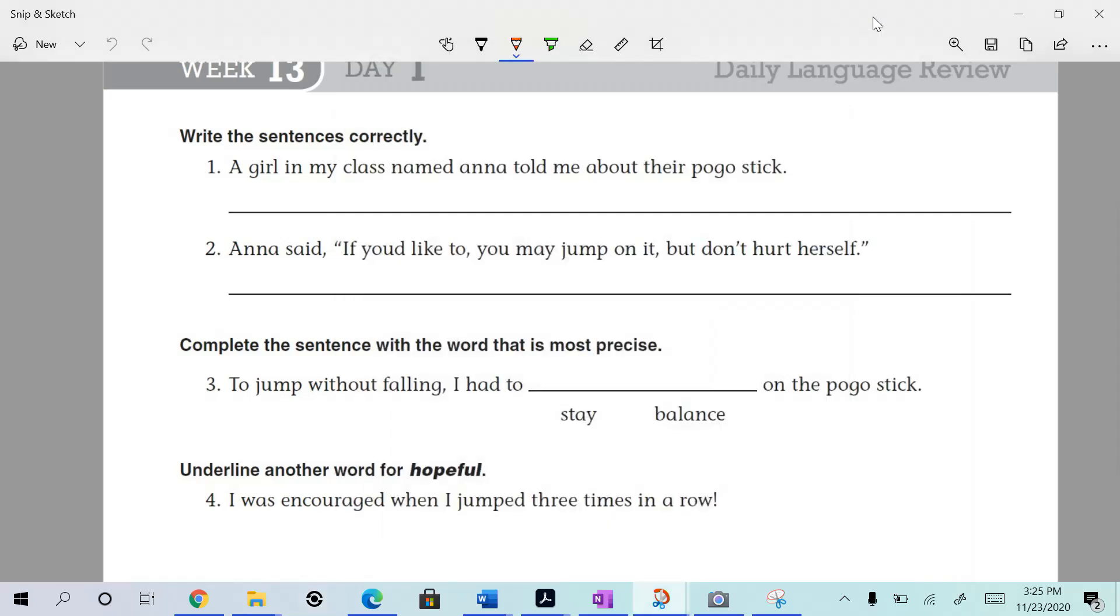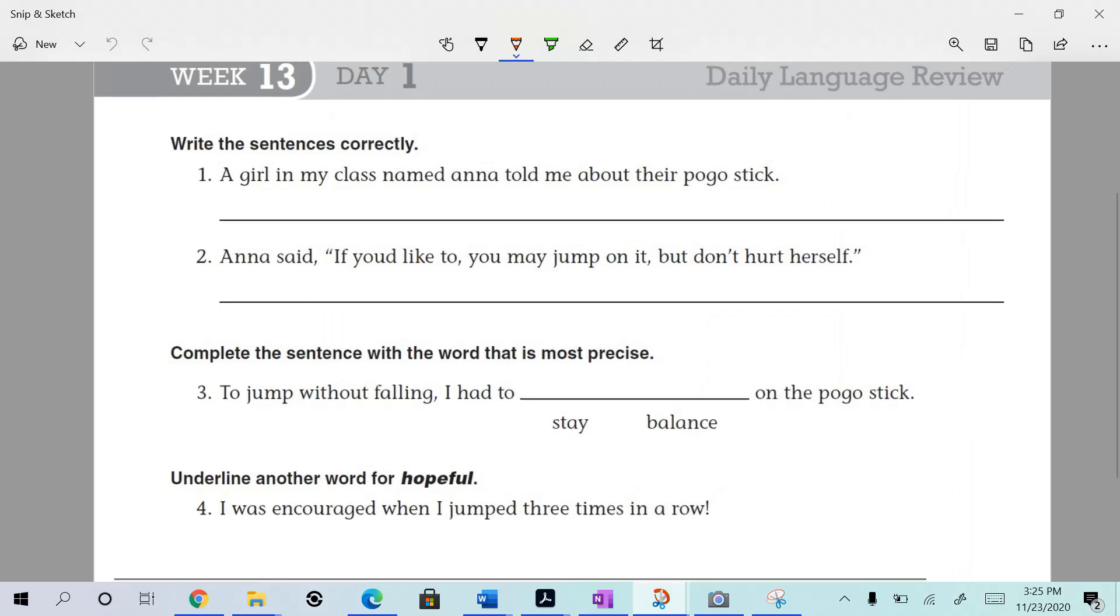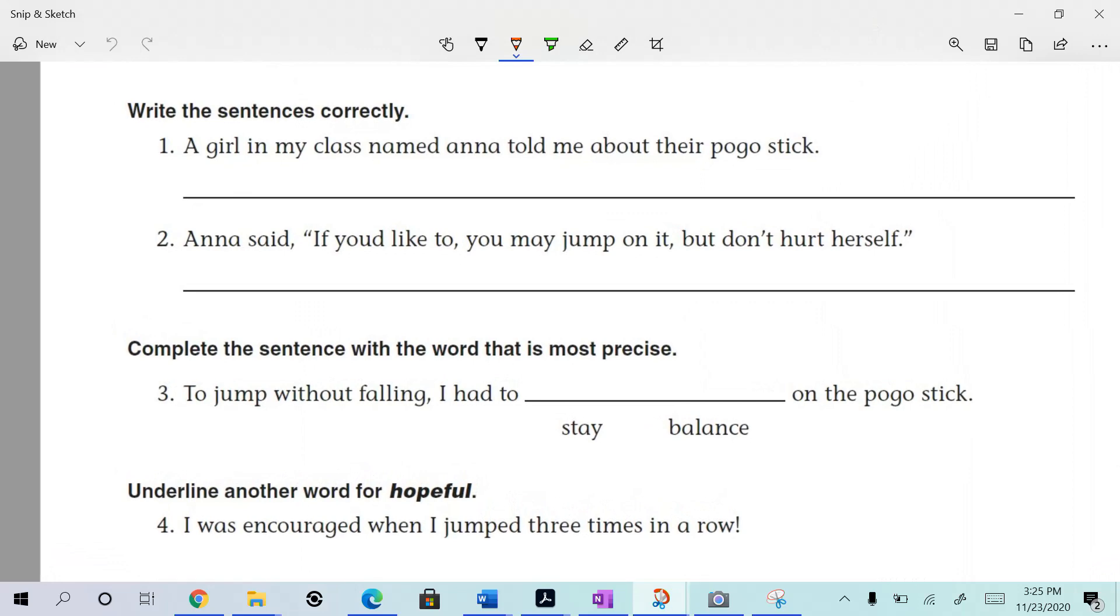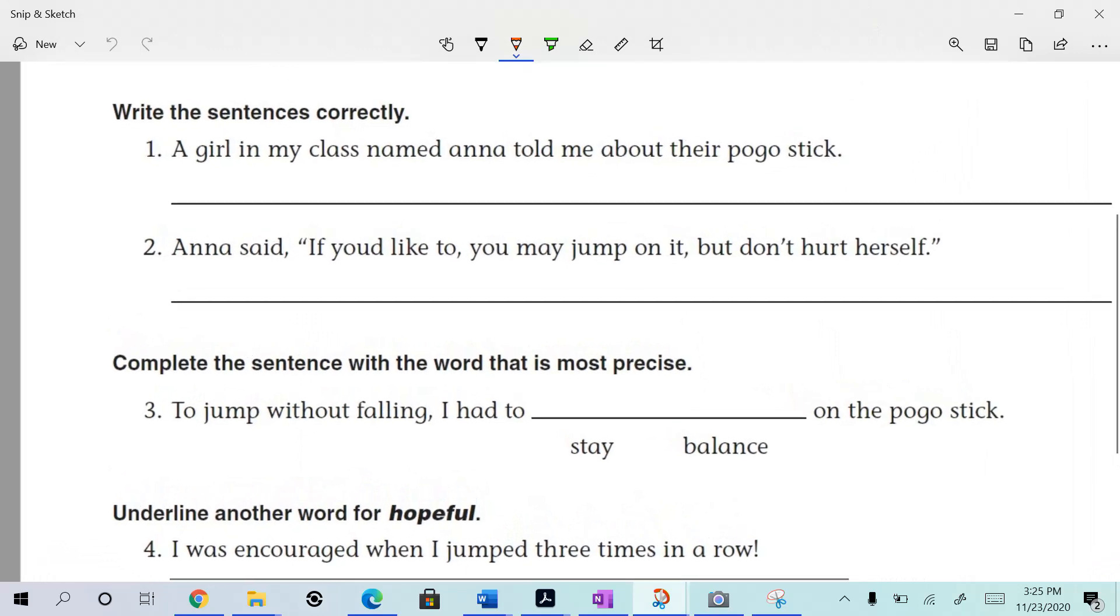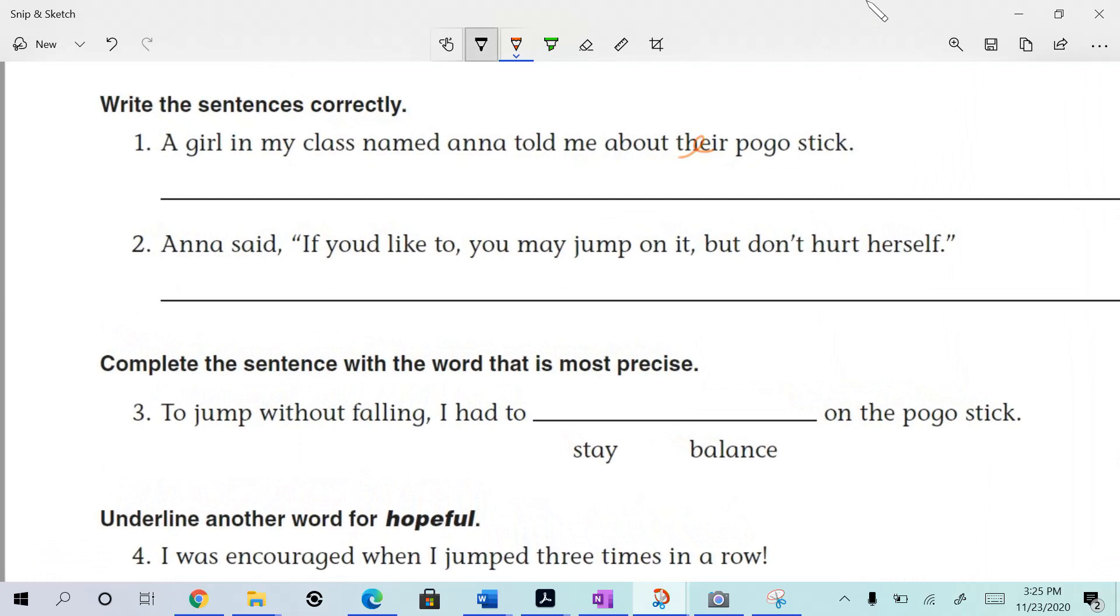Alright y'all, week 13 day one, let's get it out. We got some mistakes here for sure. Let's take a look. It says a girl in my class named Anna told me about their pogo stick. That doesn't make any sense. It's just one girl and her name's Anna, so I think it should probably be her pogo stick. That's what jumps out at me first. I have to fix that, it's driving me nuts.